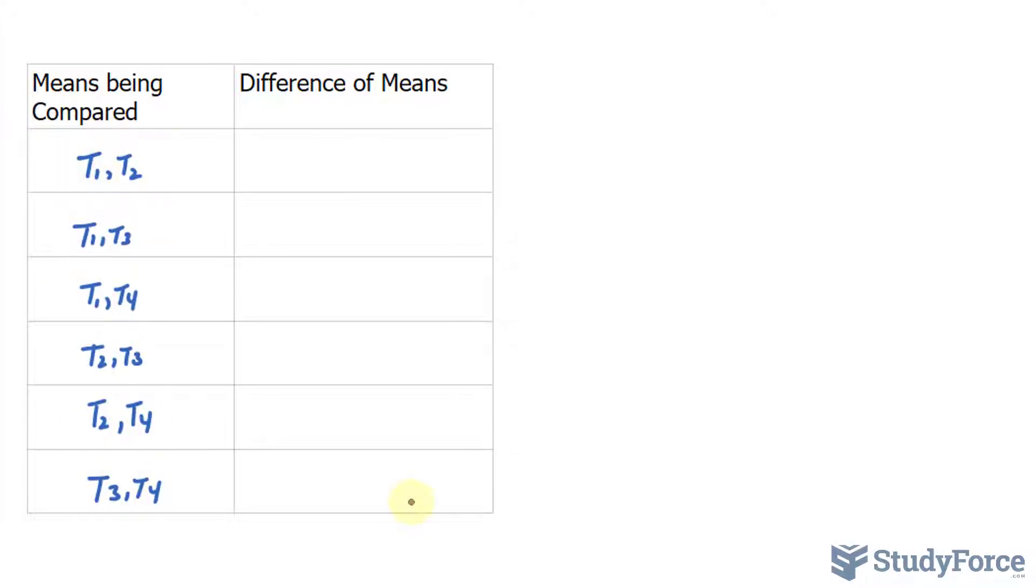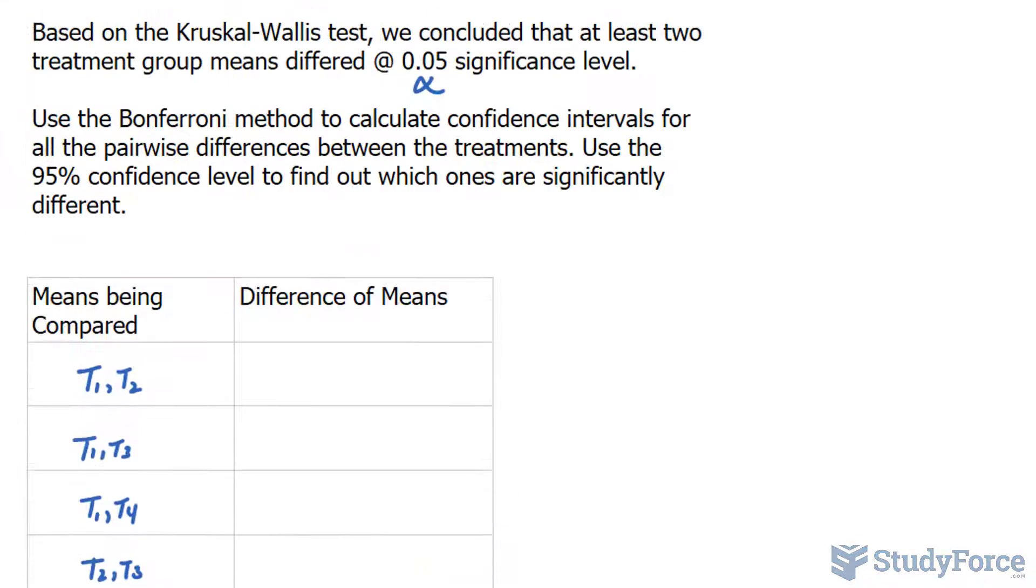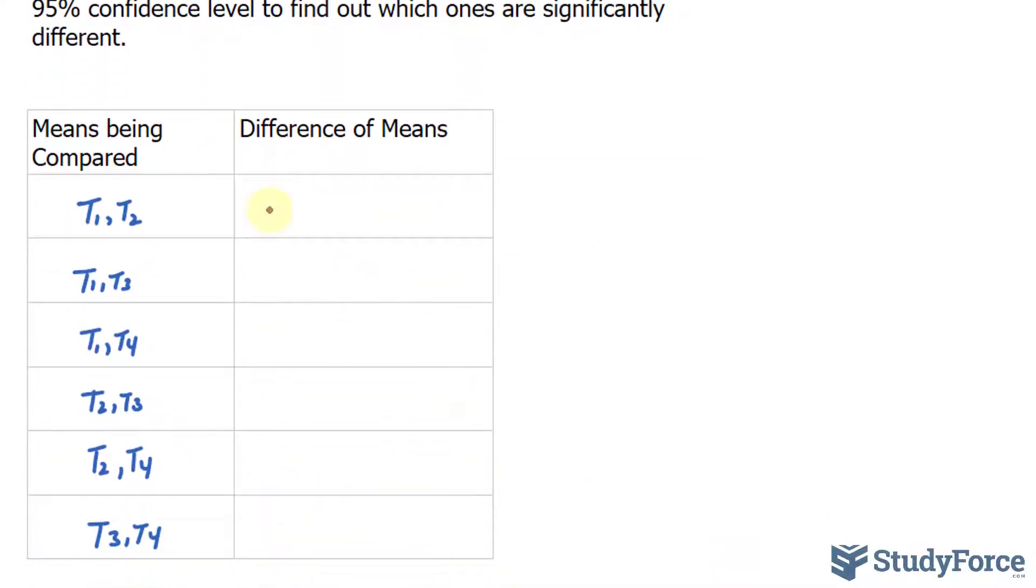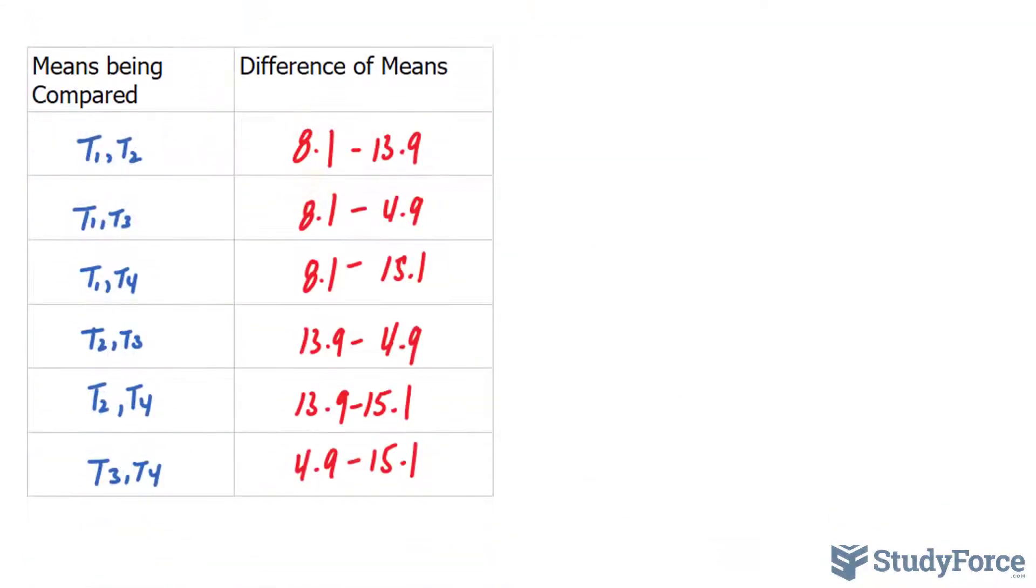Now that I've written them down, let's calculate the difference of the means. In our case, the difference in the mean ranks. I will take 8.1 minus 13.9, 8.1 minus 4.9, 8.1 minus 15.1, and you get the idea. I'll fill that in right here.